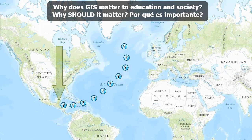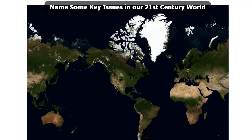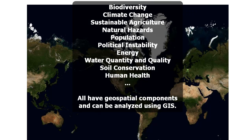I'd like to talk about why does GIS matter to education and society? Why should it matter? We could all talk about key issues in our 21st century world and come up with a list that includes biodiversity, climate change, sustainable agriculture, natural hazards, population, political instability, energy, water quality and quantity, soil conservation, human health, and so on. All of these have geospatial components, and therefore they can be analyzed using GIS.